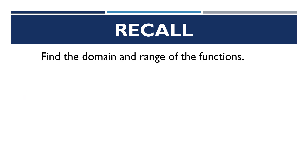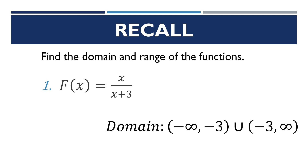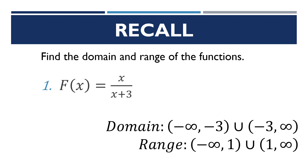This time, we are going to find the domain and range of the following functions. For f(x) = x over (x + 3), the domain is negative infinity to negative 3, union negative 3 to positive infinity. The range is negative infinity to 1, union 1 to positive infinity.